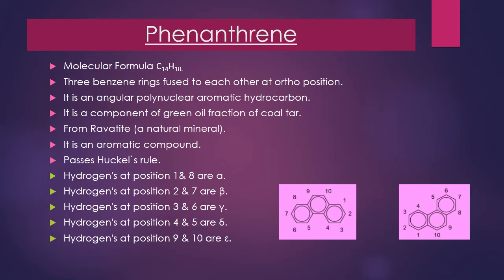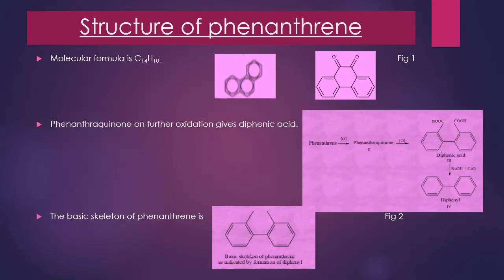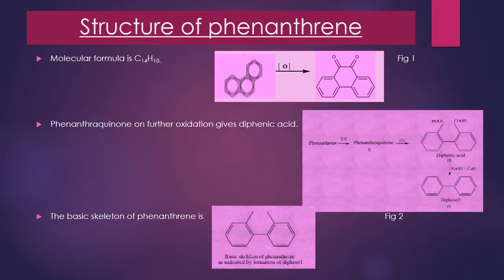Phenanthrene is an isomer of anthracene. The only difference is the linear structure of anthracene and the angular structure of phenanthrene.